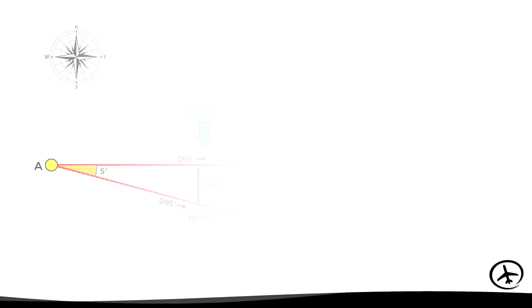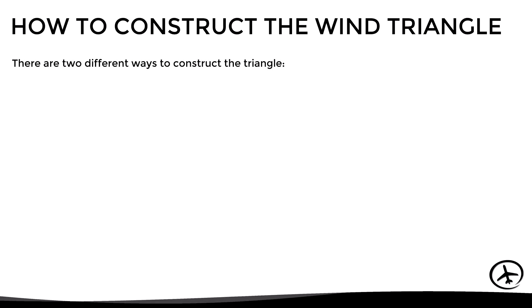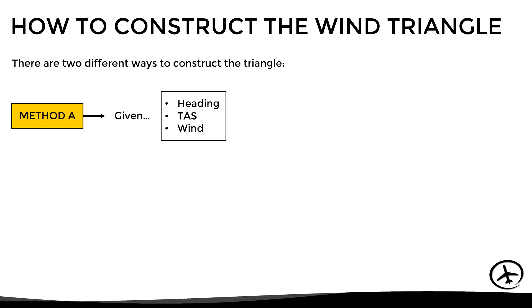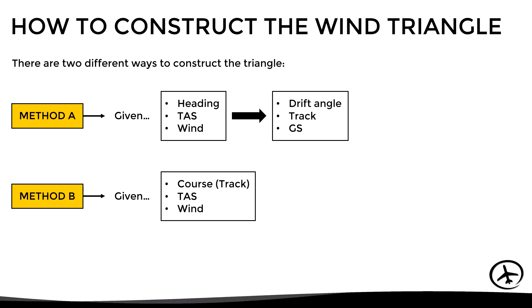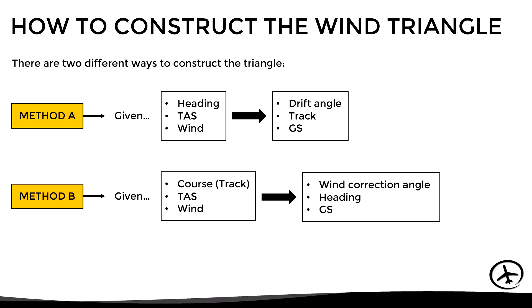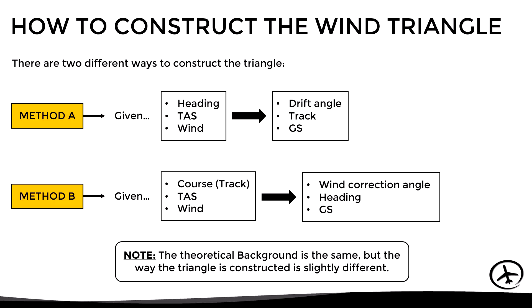There are two main ways to construct this triangle, which we will refer to as Method A and Method B. With Method A, given a certain heading, true airspeed, and wind, we can determine the drift angle, the track, and the ground speed. With Method B, given a desired course or track, true airspeed, and wind, we can determine the wind correction angle, the corrected heading to be flown, and the ground speed. Using Method A or B will depend on the kind of problem we are trying to solve.